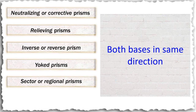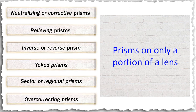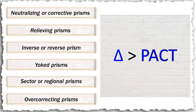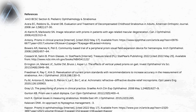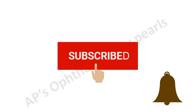Sector prisms are placed on only a portion of the spectacle lenses to provide prismatic effect for a particular distance or region only; they can either be neutralizing or relieving. Over-correcting prisms are those whose magnitude is larger than the ocular deviation as measured by the prism and alternate cover test; they change the direction of deviation, and their main use is in anomalous retinal correspondence.